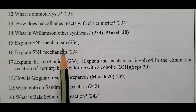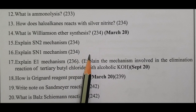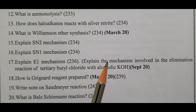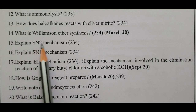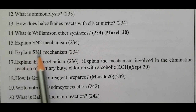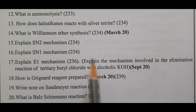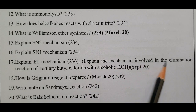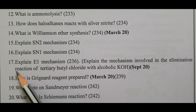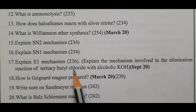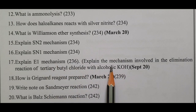The four mechanisms are: SN2, SN1, E1, and E2. One mechanism is expected. Explain the SN2 mechanism, explain the SN1 mechanism, explain the E1 mechanism. Explain the mechanism involved in the elimination reaction of tertiary butyl chloride with alcoholic KOH - that is E1.